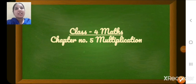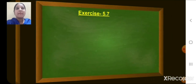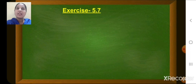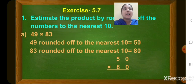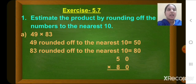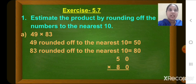Hello children. Let us continue chapter number 5, multiplication. Today we will see exercise 5.7. Question number 1 is: estimate the product by rounding off the numbers to nearest 10.